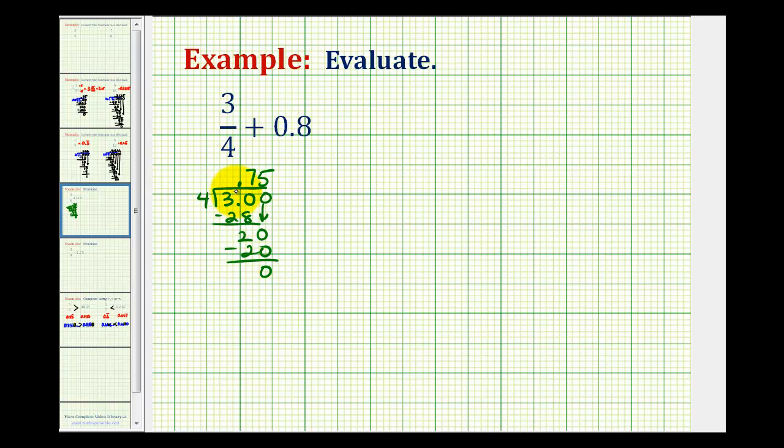So three-fourths is equal to zero point seven five. So using decimals, we can write the sum as zero point seven five plus zero point eight. Now to determine the sum using decimals, we would write this sum vertically, lining up the place values. We would have zero point seven five plus zero point eight.